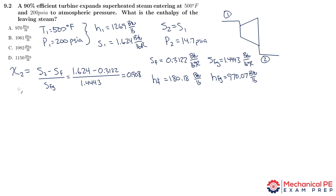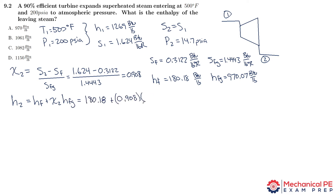We use that ideal quality to find the ideal enthalpy at state 2. H2 ideal equals hf plus the quality times hfg, which is 180.18 plus 0.908 times 970.07, and that works out to 1061.26 BTU per pound.